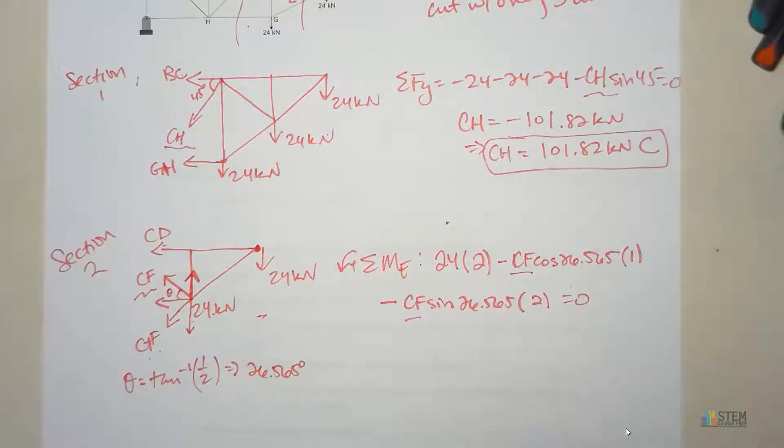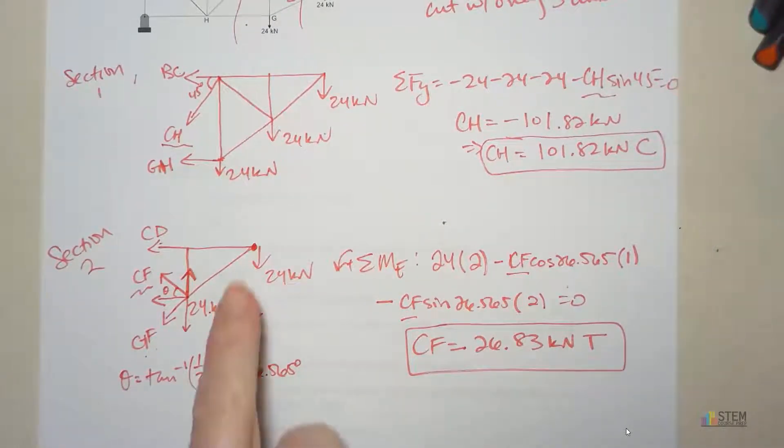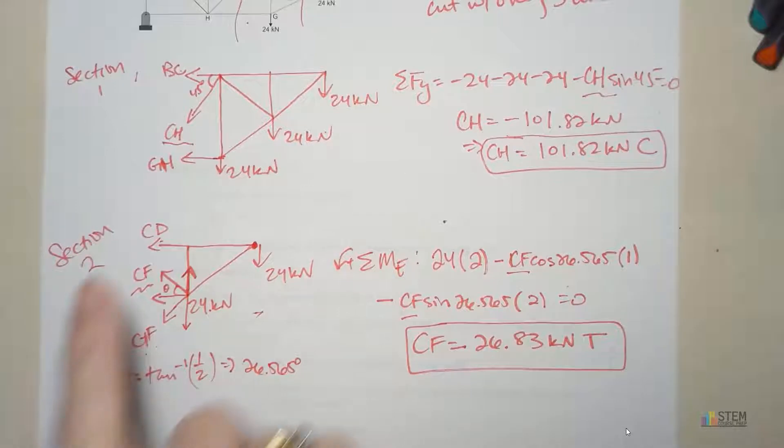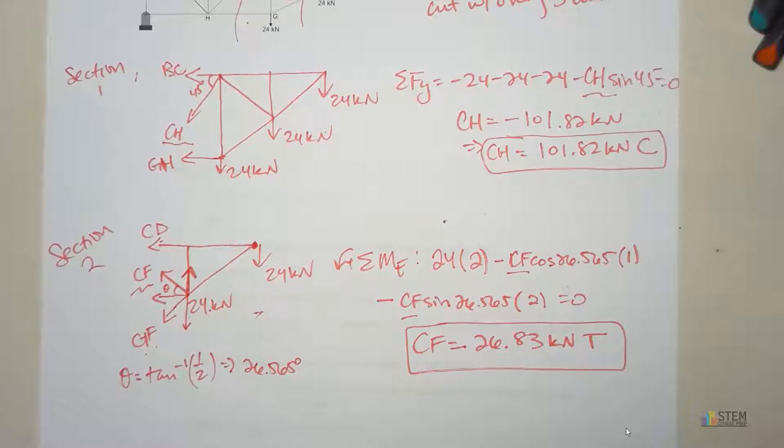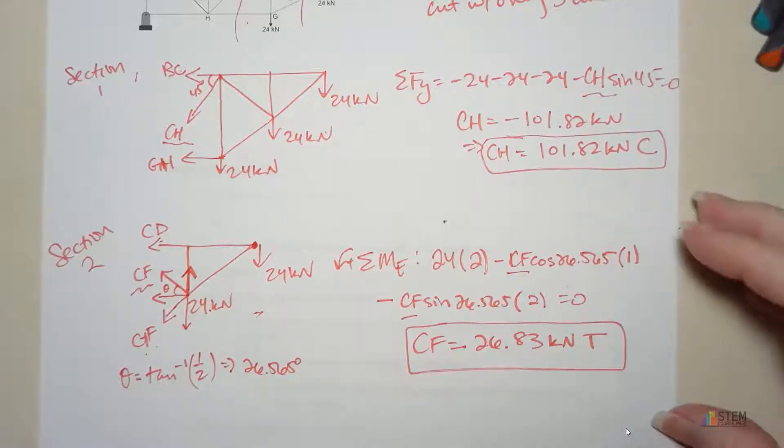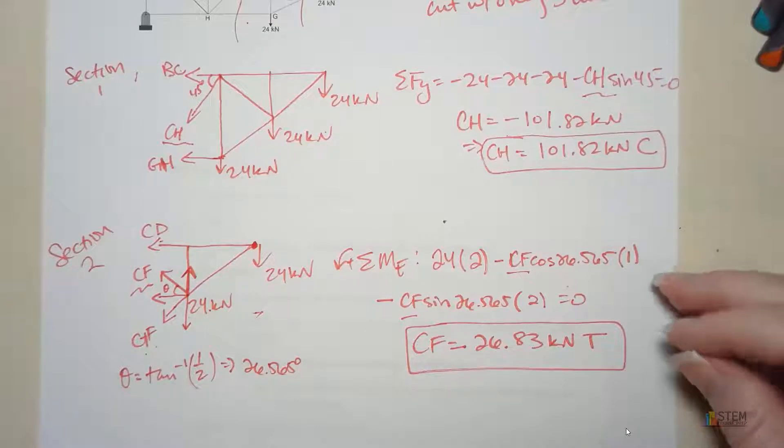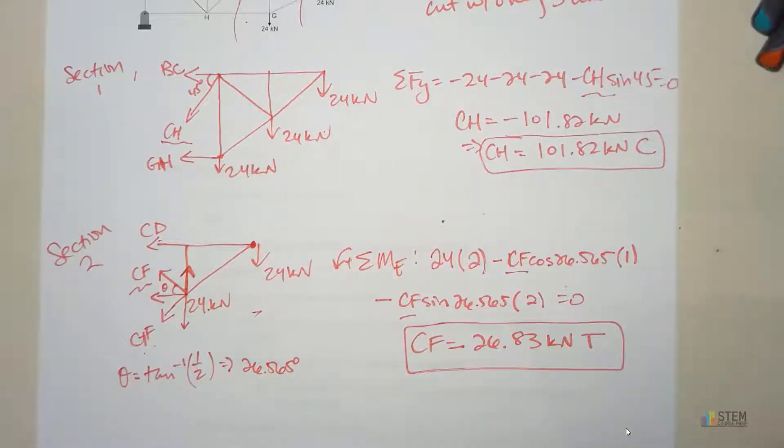Now with that, our only unknown here is CF. So that's all we have to solve for. So you're going to get a positive 26.83 kilonewtons. That's in tension. So with method of sections, you can kind of cut out a lot of steps if you just pay attention to your free body diagram and the equations you can work with. So if you use the right moment equations, you can eliminate some of the unknowns if you're not looking for those, which is what we did here. Because some people just naturally start doing the sum of the forces in the X, sum of forces in the Y, and then they get the moment equation. They don't even have to do all that. So if you're doing that on a quiz or exam, you're wasting a lot of time. So pay attention to your diagrams and look and see if the moment equation will save you some time.